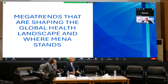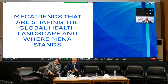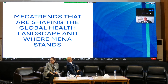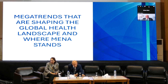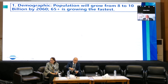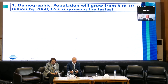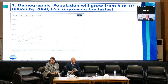What I want to do in the next ten minutes is to speak about the bigger trends that are shaping the global landscape. The first mega trend is demographic. The population will grow from 8 to 10 billion by 2060, and the age group 65 and older would be the most prominent age group, as this chart shows.